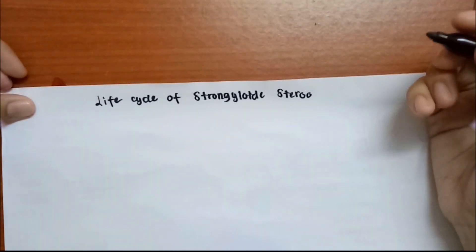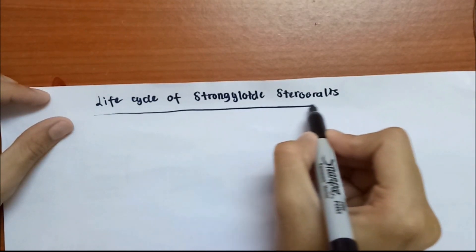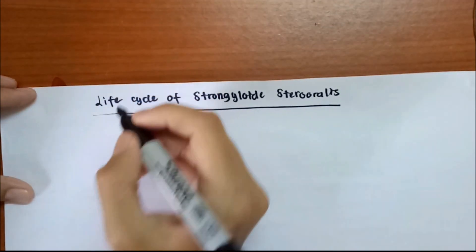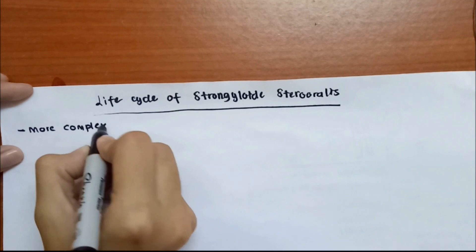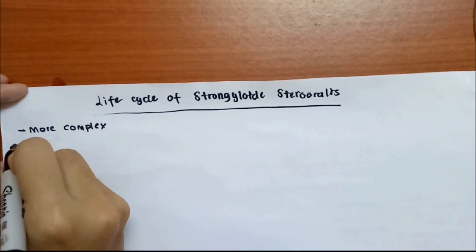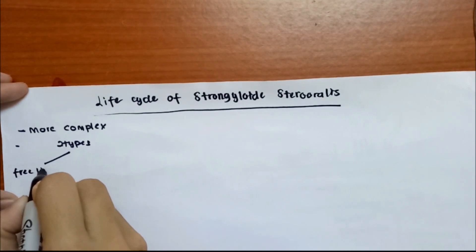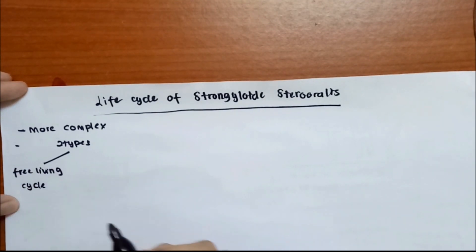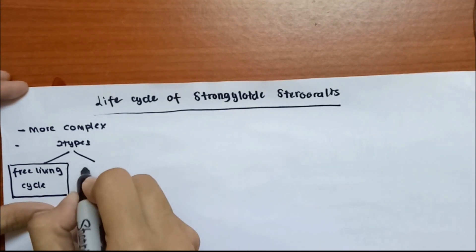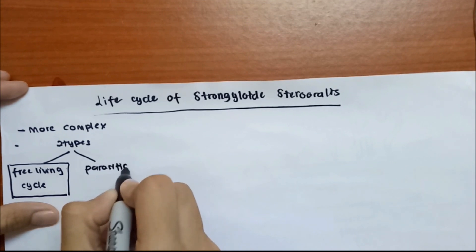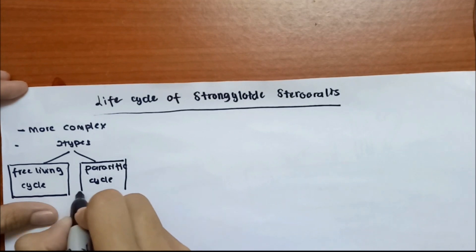Hi everyone. Today we are going to study Strongyloides stercoralis. What we are going to focus on today is the life cycle of Strongyloides stercoralis. The life cycle of Strongyloides stercoralis is more complex compared to other soil-transmitted helminth (STH) species. There are two types of cycles: the free living cycle and the parasitic cycle.